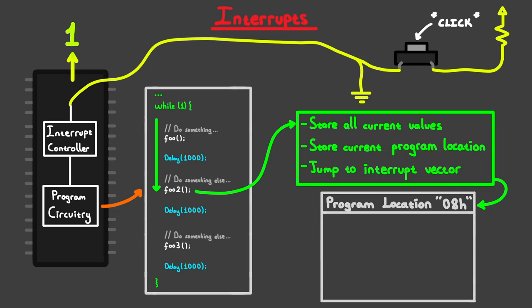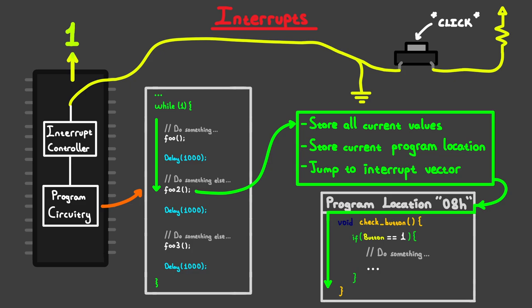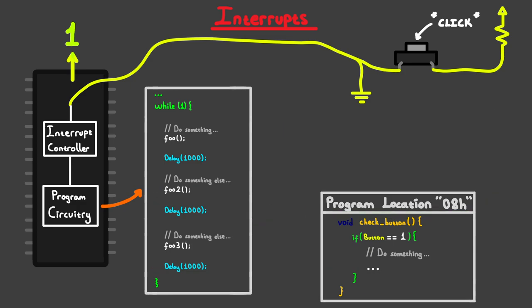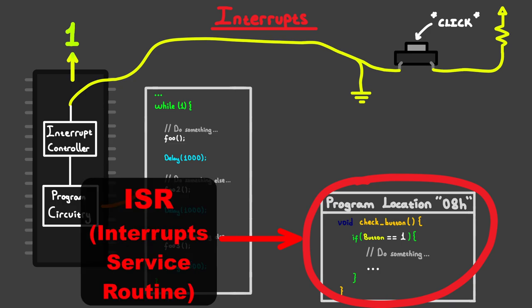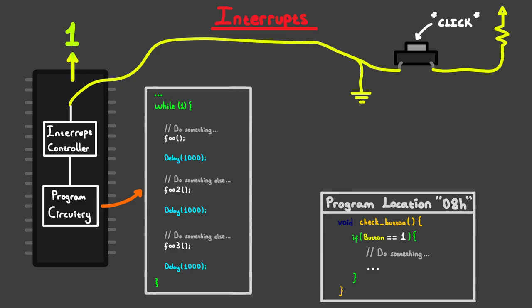This action is the same as jumping to a function call. If you put your button press code at the interrupt vector location and make the button press trigger an interrupt, you can execute that code whenever an interrupt occurs. Then, if you restore your values and stored program location, you can continue executing your code from where you left off, just like a normal function call. This special function is called the ISR, which stands for Interrupt Service Routine. The microcontroller automatically calls this function whenever an interrupt occurs, as if it's inserting the function in front of your main code whenever the interrupt occurs, then removing it.